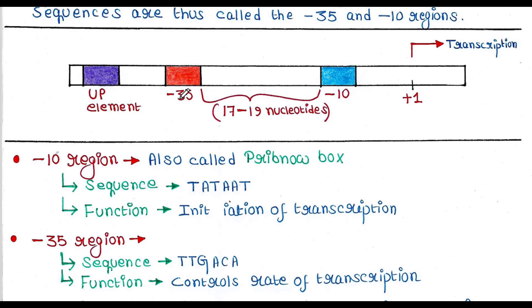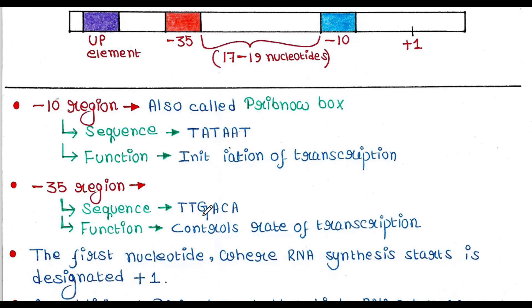The minus 35 region has the sequence TTGACA. Its function is to control the rate of transcription.